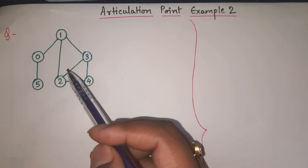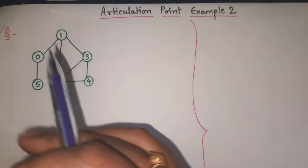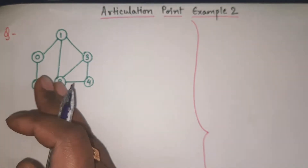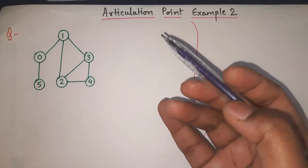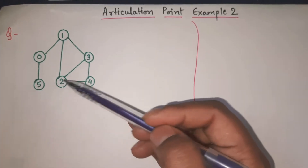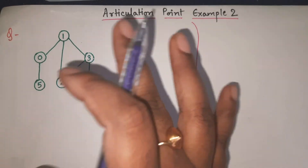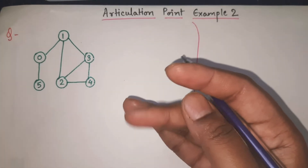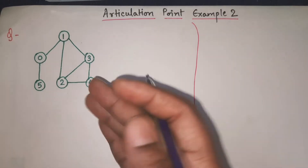The question is: find out the articulation points present in this graph. Remember the first step — from this graph we need to construct a tree. To construct the tree, we will give numbers to the nodes of this graph as per the DFS traversal. I have explained everything in detail in the previous video, so in this video I will go quite quickly — this is just a practice example.